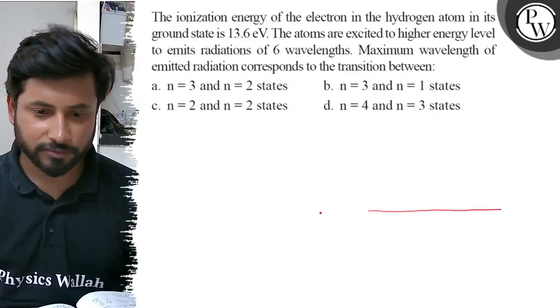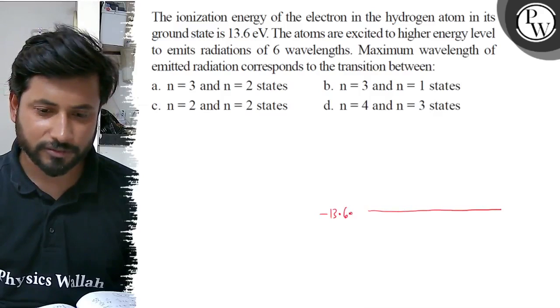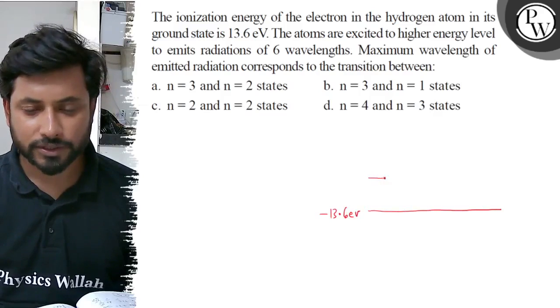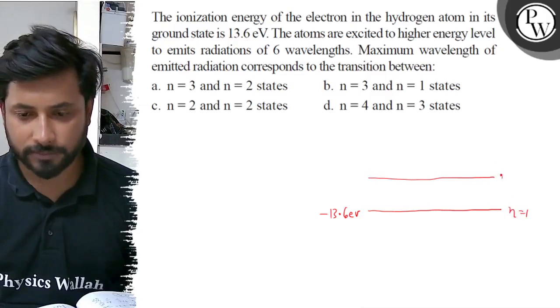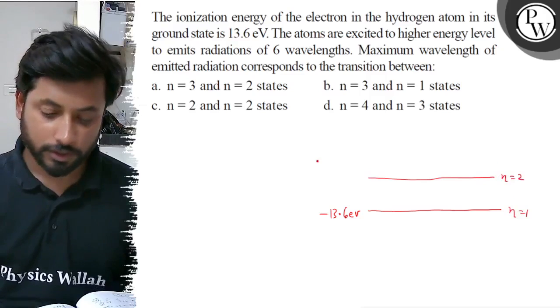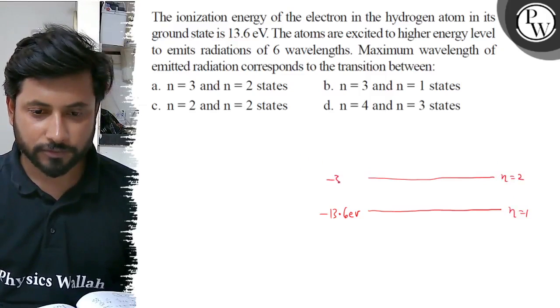The ground state energy is minus 13.6 electron volt. Just above n equals to 1, the energy is minus 3.4 electron volt.